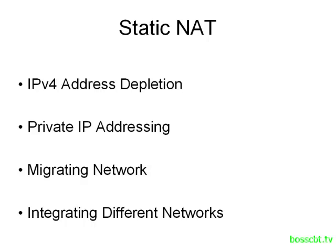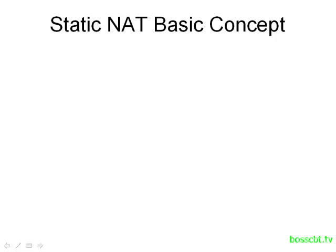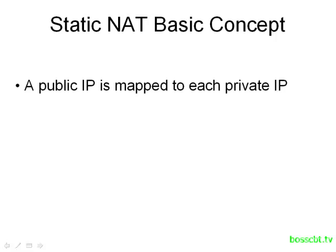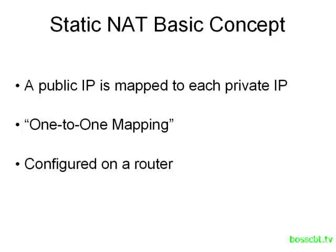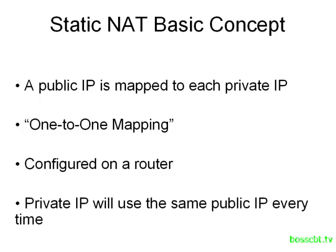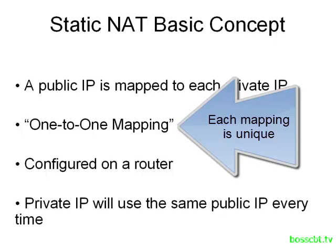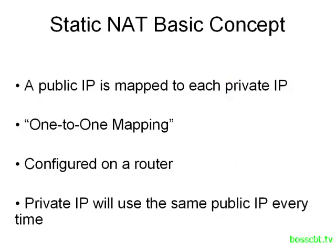We're going to take a look at static NAT, the first of the three types of NAT we're going to discuss. A public IP is going to be used for each private IP when we NAT — this is often referred to as a one-to-one mapping, and it's configured on the router. The private IP will use the same public IP every time it accesses the internet, which is why it's called static. It doesn't change unless you manually change it.